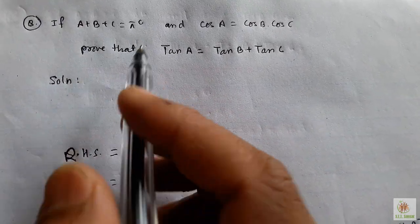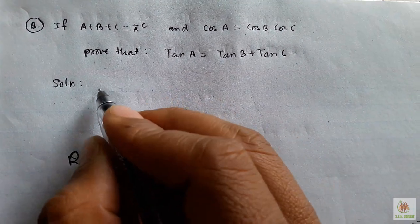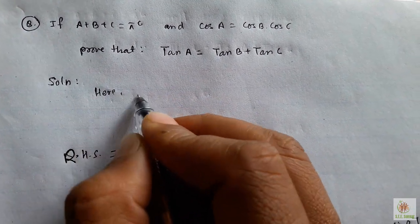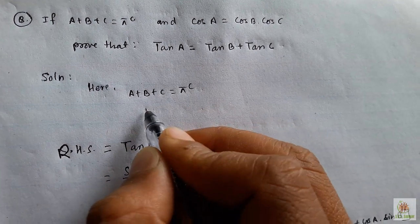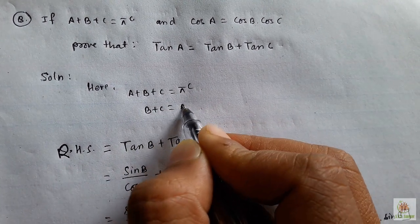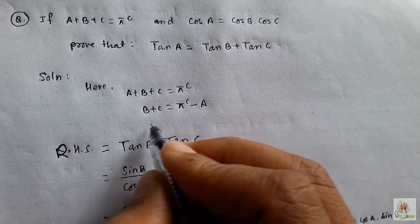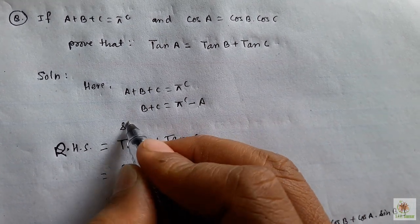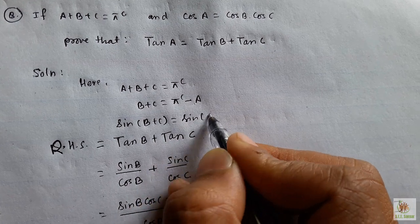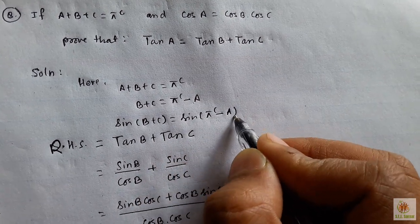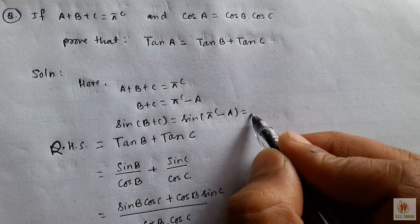Again, we are given this condition: A + B + C equals π radians. Let's use that here. If A + B + C equals π radians, then B + C equals π minus A. Taking sin on both sides, sin(π - A) equals sin A.